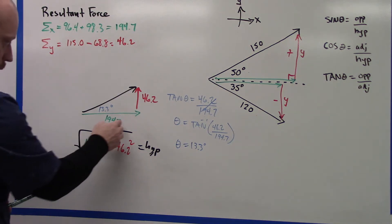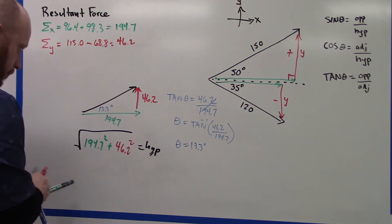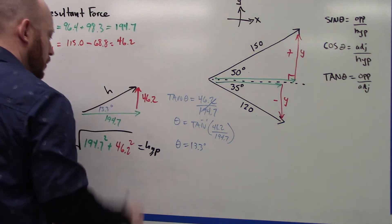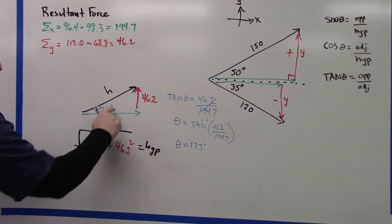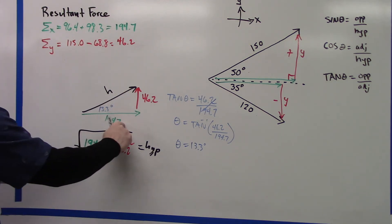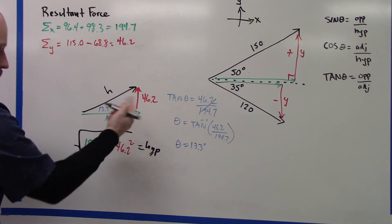Or I could do trig. I could use any one of these. I'll call this H for hypotenuse. I could say if I want to use cosine, I would use this one. If I want to use sine, I would use that one. So I'll just use cosine.